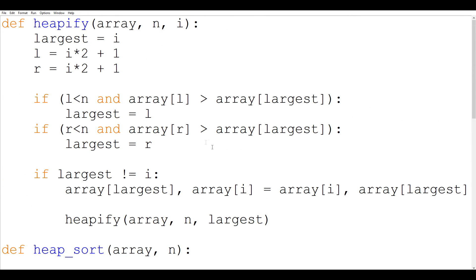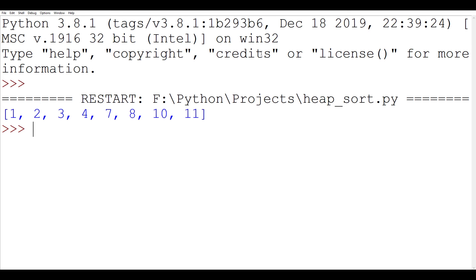So okay yeah. Here it should not be 1 it should be 2 because r the index of the right child will always be 1 greater than the index of the left one. So this should be 2 and now the program should work. 1 2 3 4 7 8 10 11. So the program has worked. It has sorted the elements in the correct order.